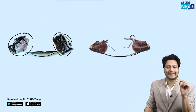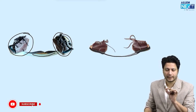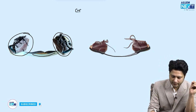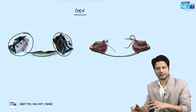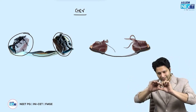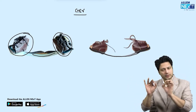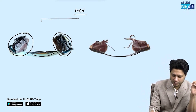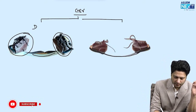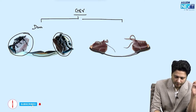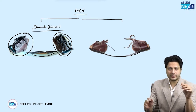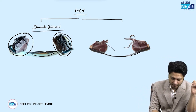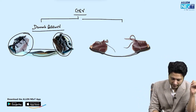Another very commonly asked brace is that for CTEV — congenital talipes equinovarus. If you see a pair of shoes connected by a bar, it is for CTEV. The first splint for CTEV is the Dennis Brown splint, identified by two shoes connected by a bar in between.